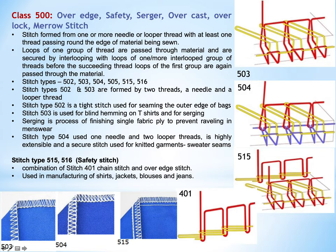We were discussing class 500 stitches. They are called overhead safety stitches because one group of threads passes through the edge of the material, resulting in edge finishing or neatening of the edge, preventing particularly knitted fabrics from raveling. That is why they are called safety stitches.